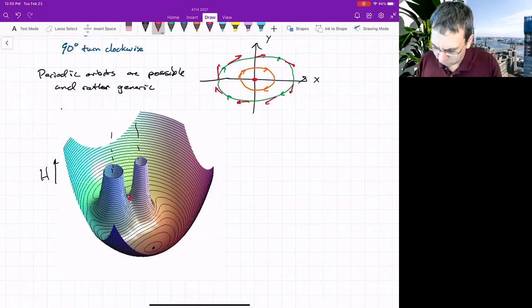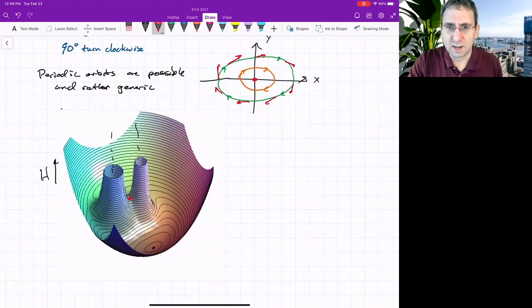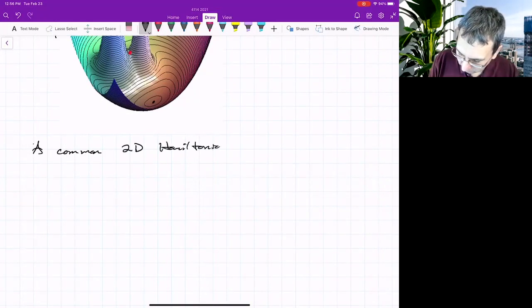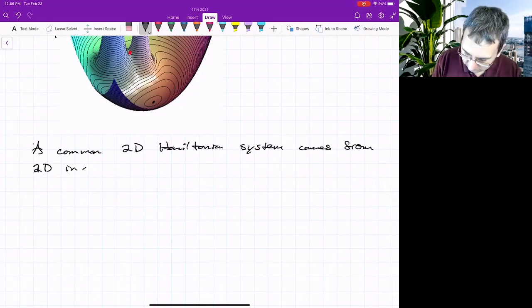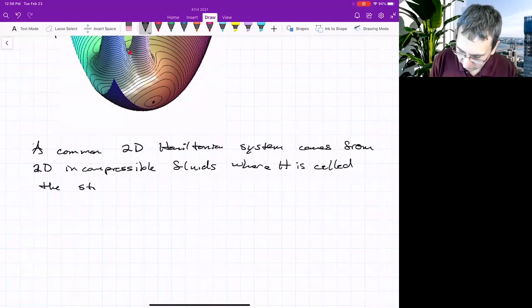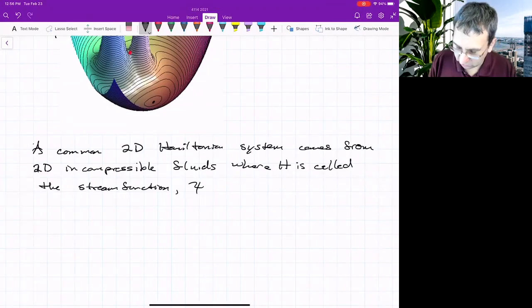And you might be wondering, where do these kinds of things show up? If you've studied fluid mechanics, 2D incompressible flow, sometimes they don't say they're Hamiltonian systems, but common 2D Hamiltonian systems come from fluids. 2D incompressible fluids, where h is called the stream function. And it's usually given a different symbol. Usually write it as psi.